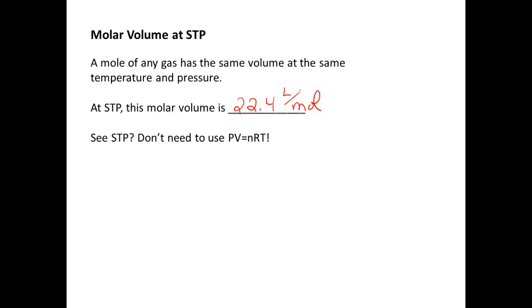How I remember it is, if you see STP in your problem, you do not need to use PV equals nRT. Instead, you can use this shortcut. And this shortcut is basically treating our 22.4 liters per mole as a conversion factor like a normal unit conversion.